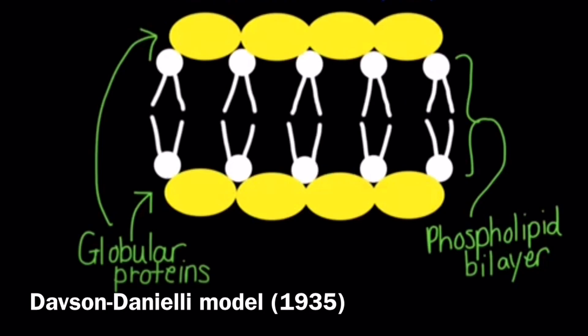Davson and Danielli had proposed a model of the cell membrane in which there was a phospholipid bilayer with globular proteins coating each surface.